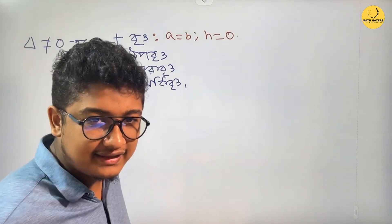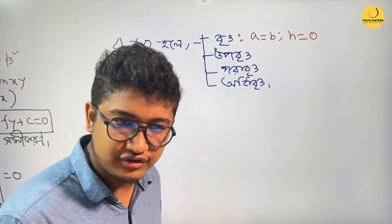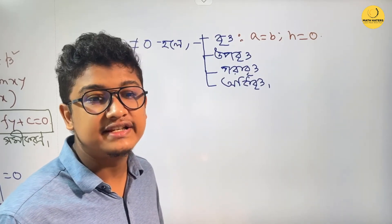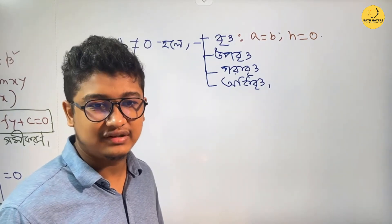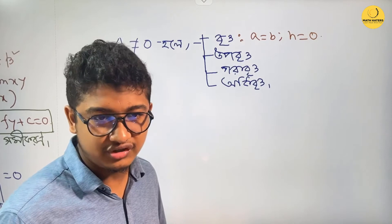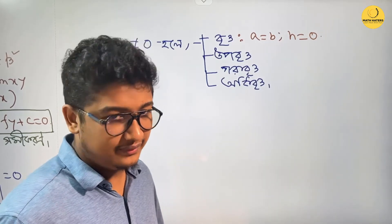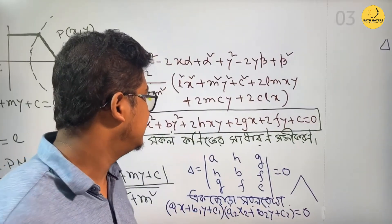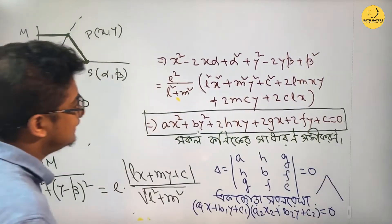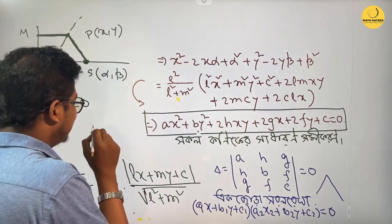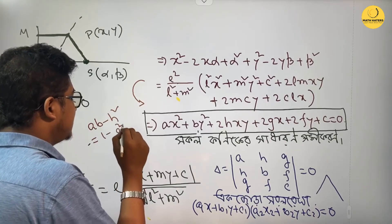You will have to write the answer. For the expression ab minus H squared — consider H squared and XY — the position gives each term. It is: ab minus H squared is related to 1 minus e squared.